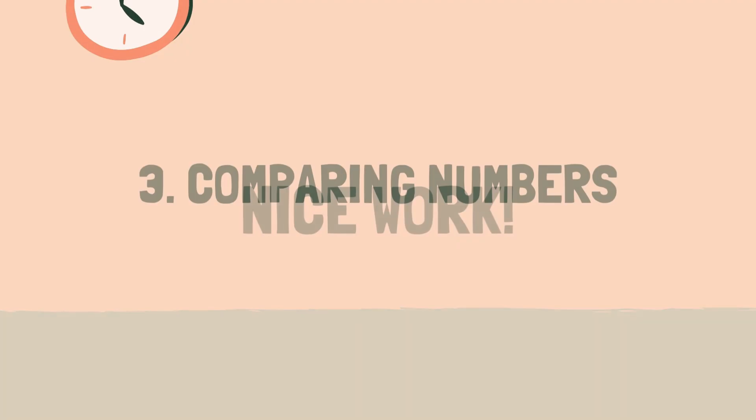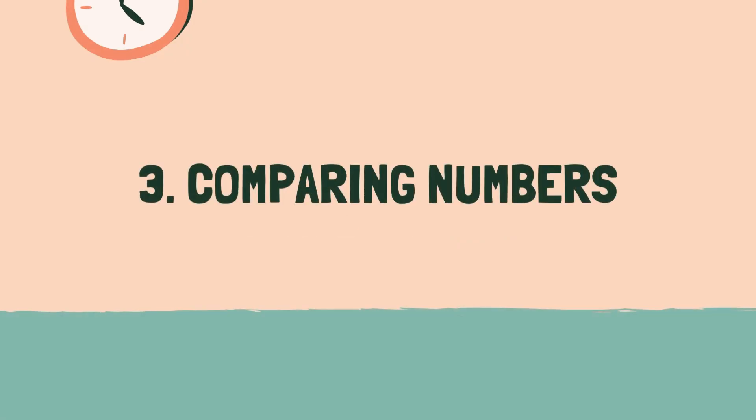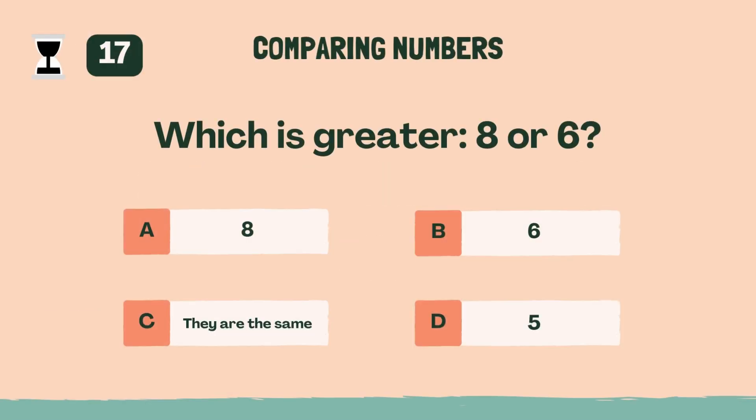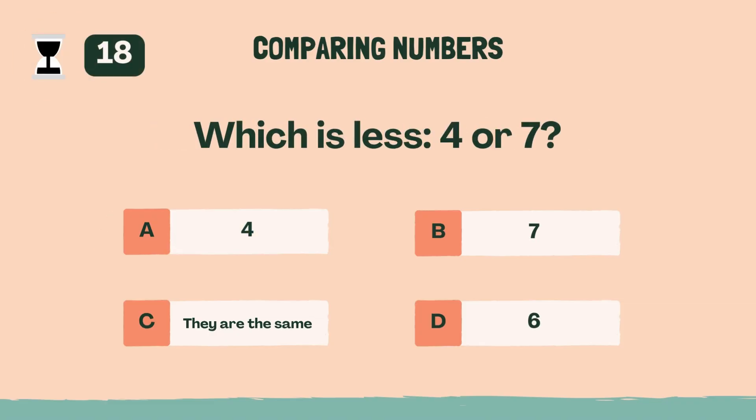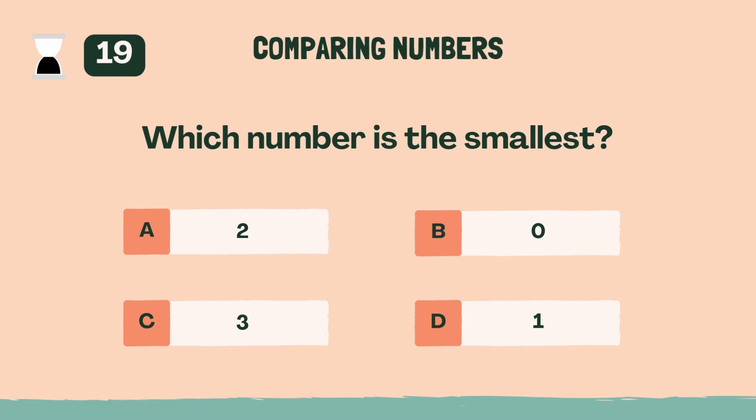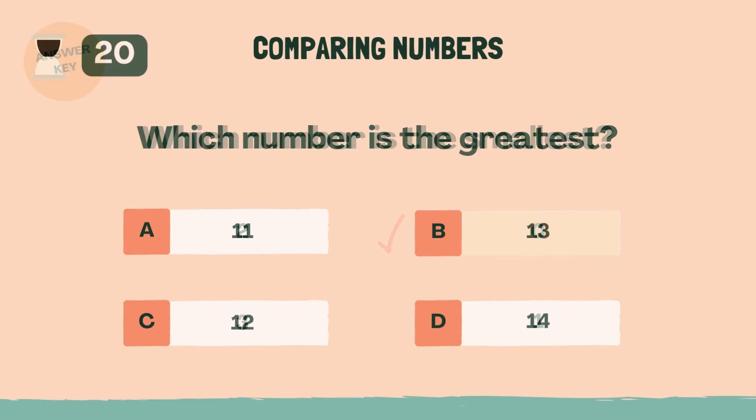Which is greater 8 or 6? A, 8. Which is less 4 or 7? A, 4. Which number is the smallest? B, 0. Which number is the greatest? D, 14.